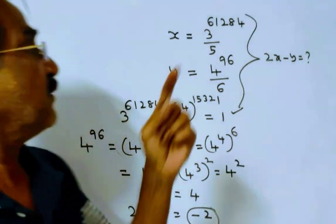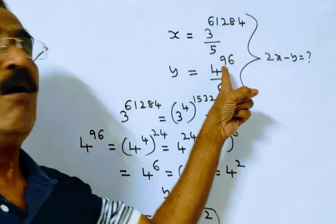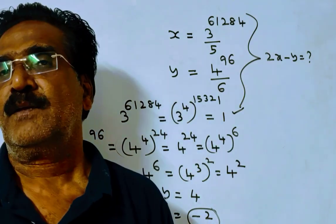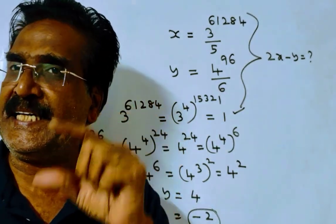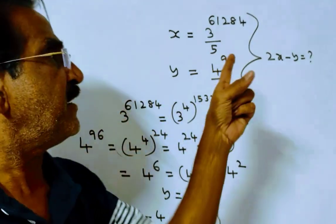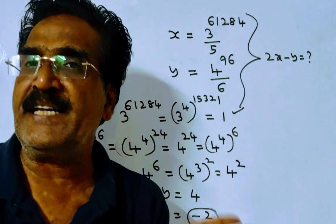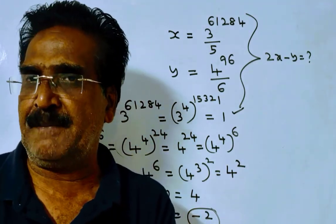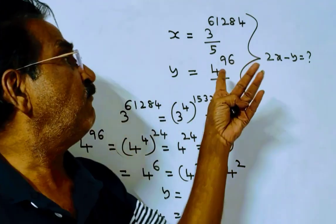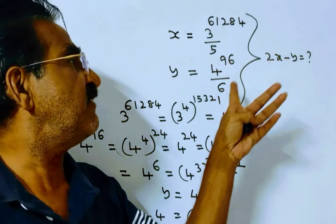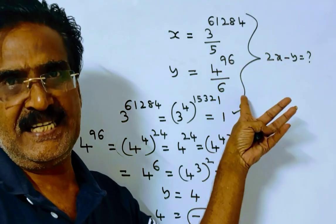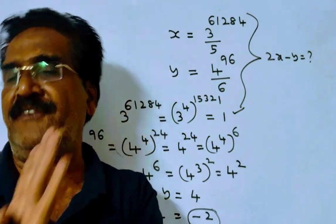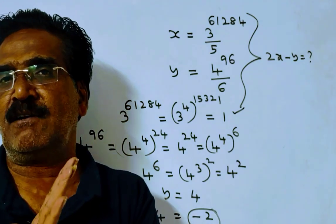Friends, one more thing. For all positive values of n, when 4 power n is divided by 6, where n belongs to the set of natural numbers, the remainder is always 4.